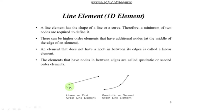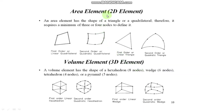For a straight line, the two corners are node 1 and node 2. If the line is straight, then it's a linear first-order line element. Now we will discuss the second element, that is the two-dimensional element. Everyone knows that two-dimensional elements include triangular element and rectangular element.